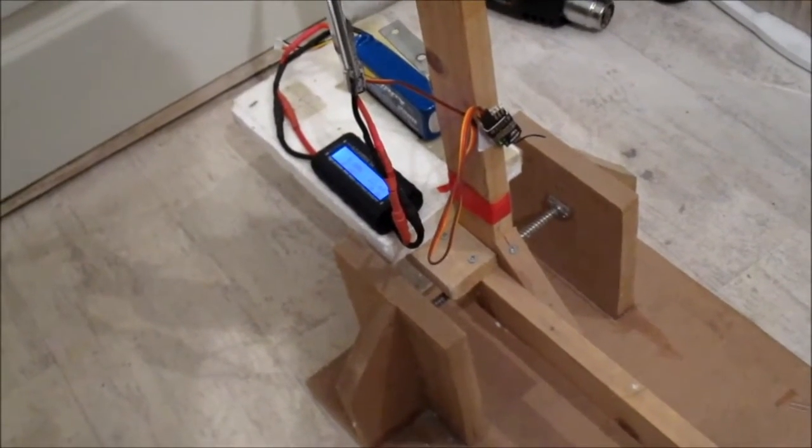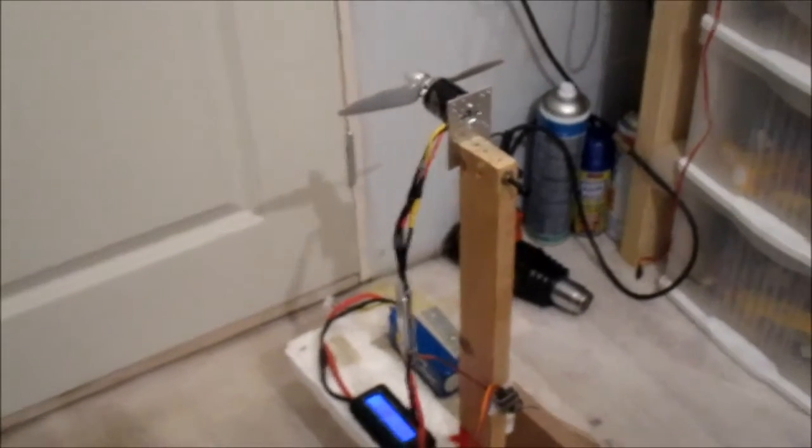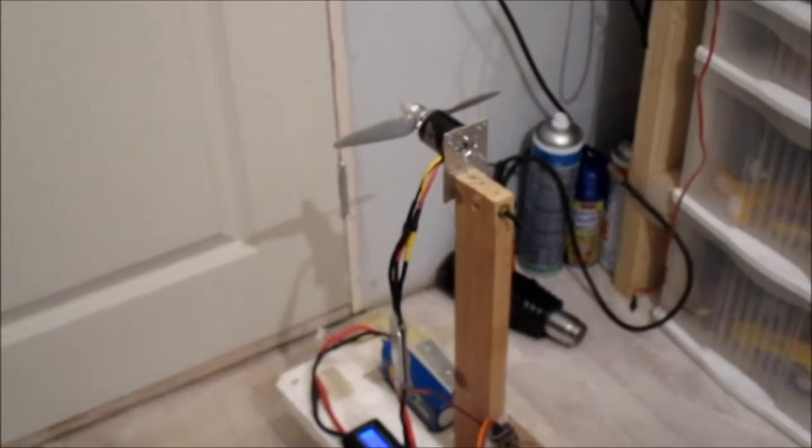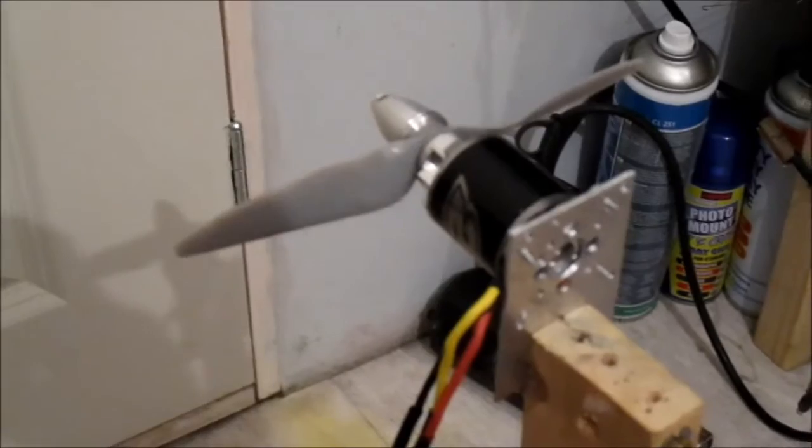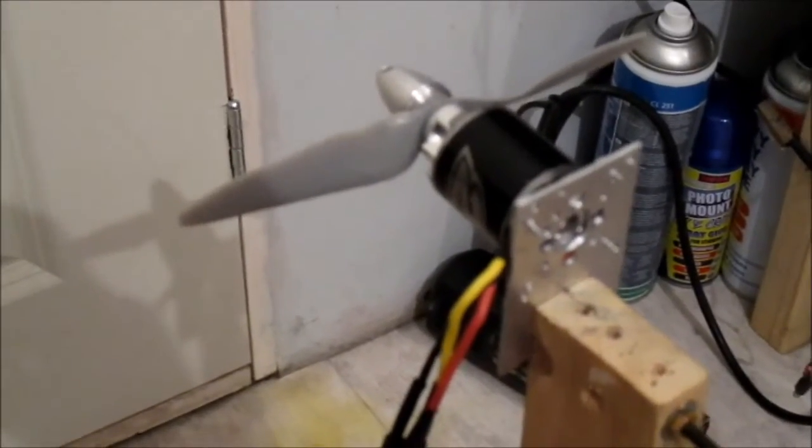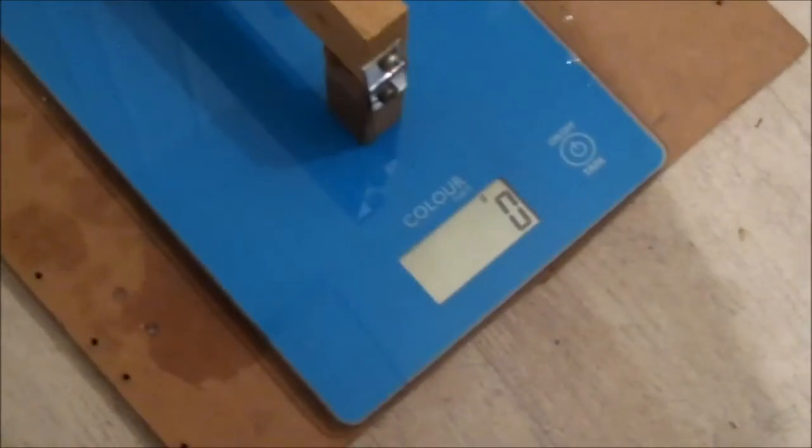Let's try another prop. I'll go away and come back with that new prop on. Next prop I'm trying here is an APC 6 by 4, so it's the same as the TGS, still on the same battery and everything. Let's see what we get here.